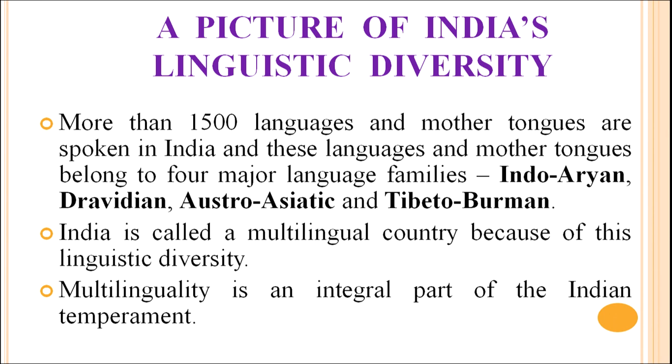We can safely say that India has more than 1,500 languages and mother tongues spoken in different parts of the country. All these mother tongues and languages belong to four major language families: Indo-Aryan, Dravidian, Austro-Asiatic, and Tibeto-Burman. There are also two minor language families — the Andamanese family, which has languages primarily spoken in Andaman and Nicobar Islands, most of which have become extinct, and the Tai-Kadai family, mostly located in Assam and neighboring areas, with only about five or six languages in India.